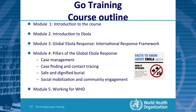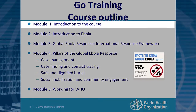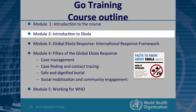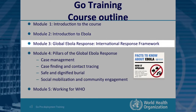The course outline is in five modules. The first module is obviously this module, introducing you to the course. The second module really reinforces what we currently know about Ebola — how it's caused, how it's transmitted, how it can be stopped. Module three takes you through the global Ebola response, the international response framework, who is doing what, and what are the main pillars of response.